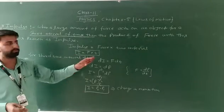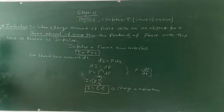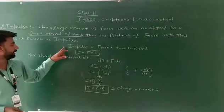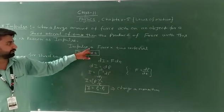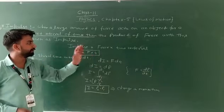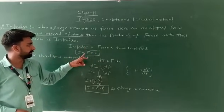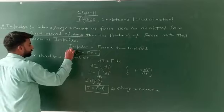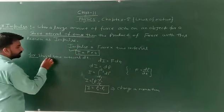This product of force and time is known as impulse. It is denoted by I, so impulse is equal to force into time interval, so I equal to F into T. This is the impulse for a small time interval.